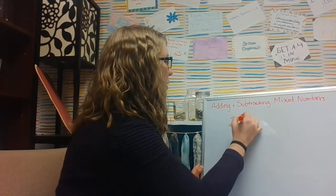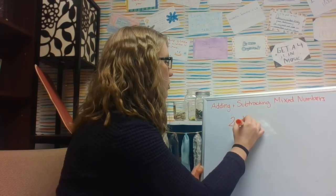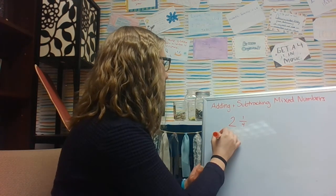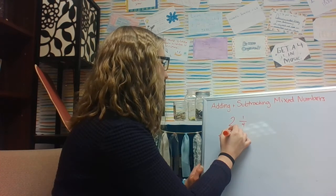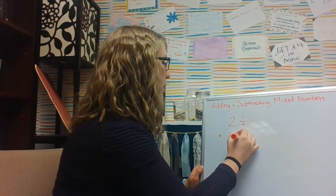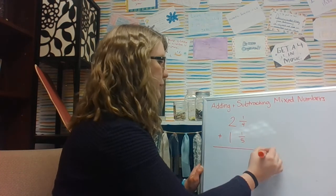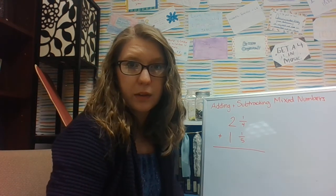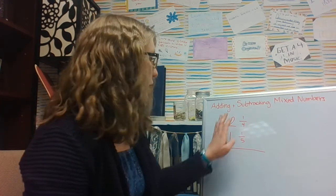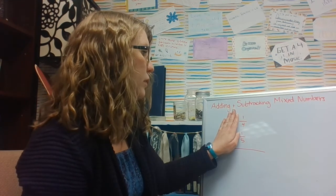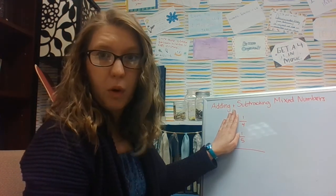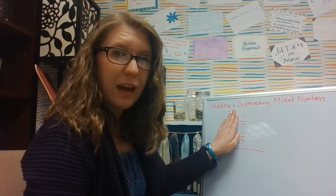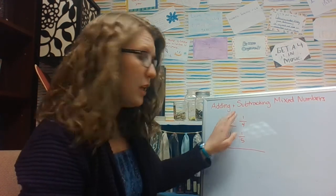So let's say that I had 2 and 1/4 plus 1 and 1/5. What I could do is kind of ignore my whole numbers, which I think actually is a good strategy if you're adding.